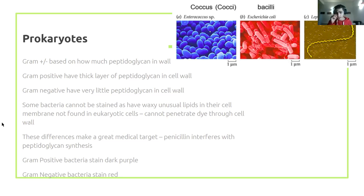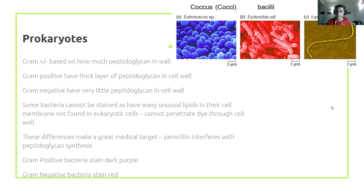Some bacteria can't be stained at all because they have waxy layers on top that the dye can't penetrate. A gram positive stain turns dark purple, while gram negative stains red, because we use different counter-staining mediums. Peptidoglycan is really useful because if we know something is gram positive, we can target that peptidoglycan — penicillins, for example, attack peptidoglycan synthesis.